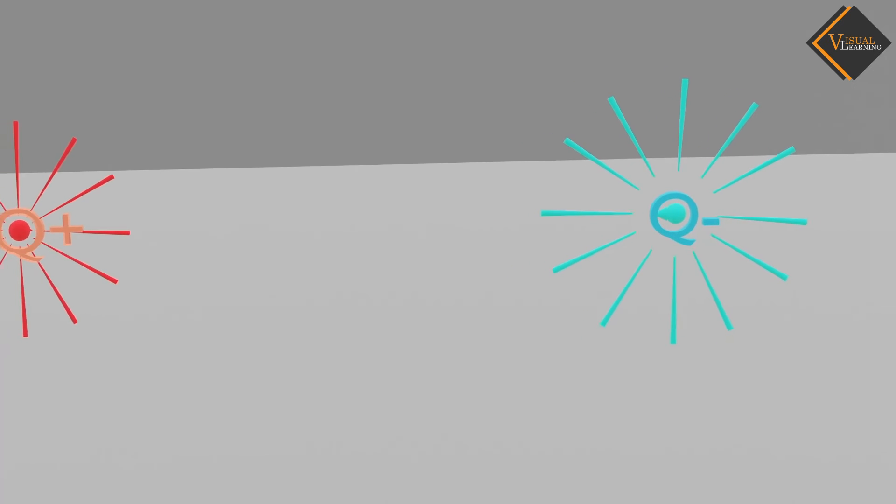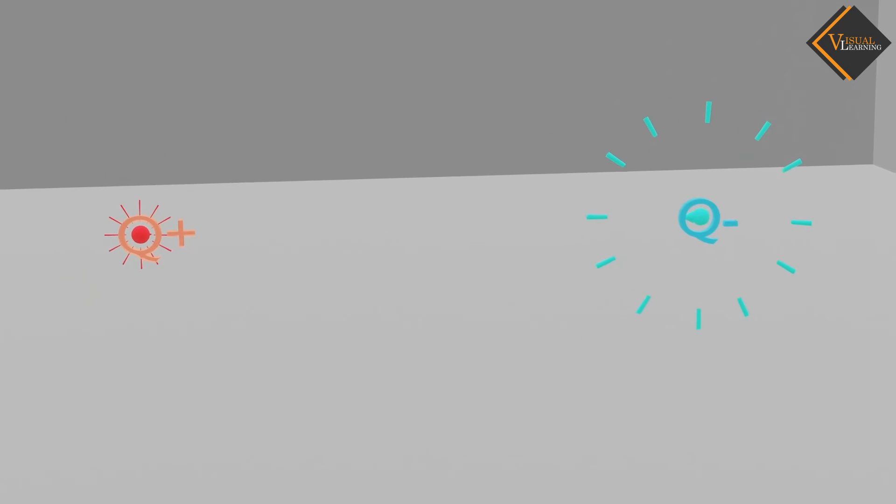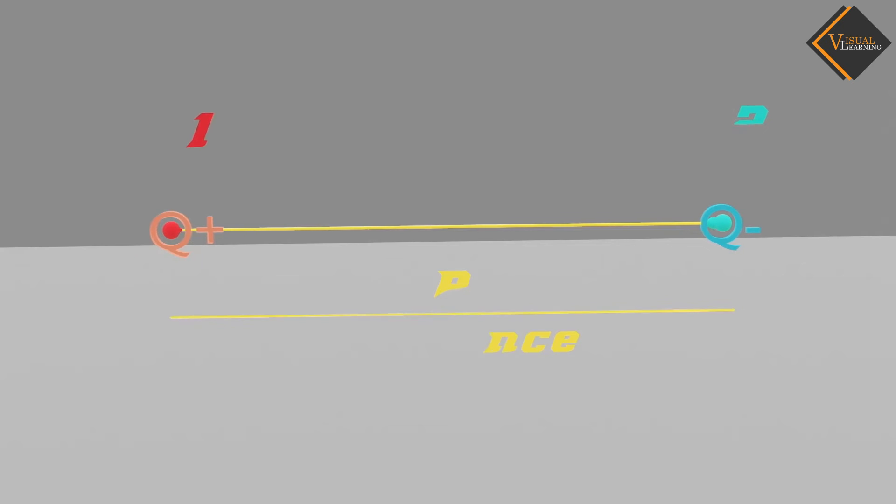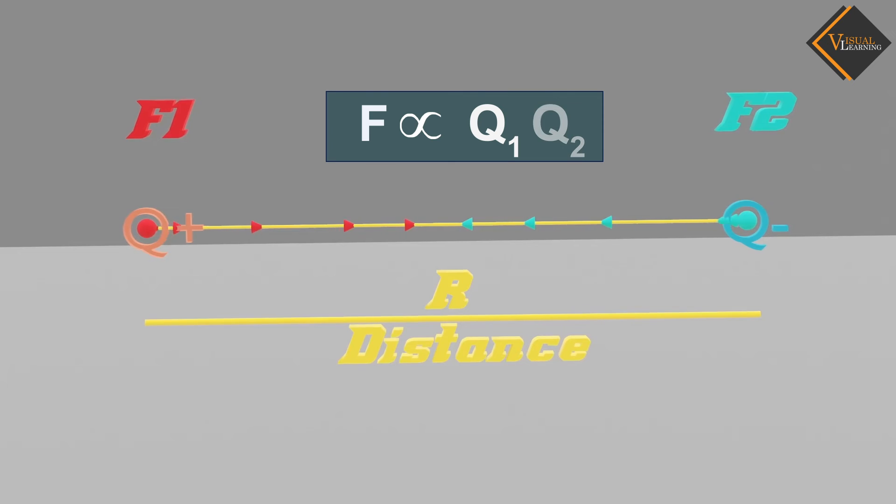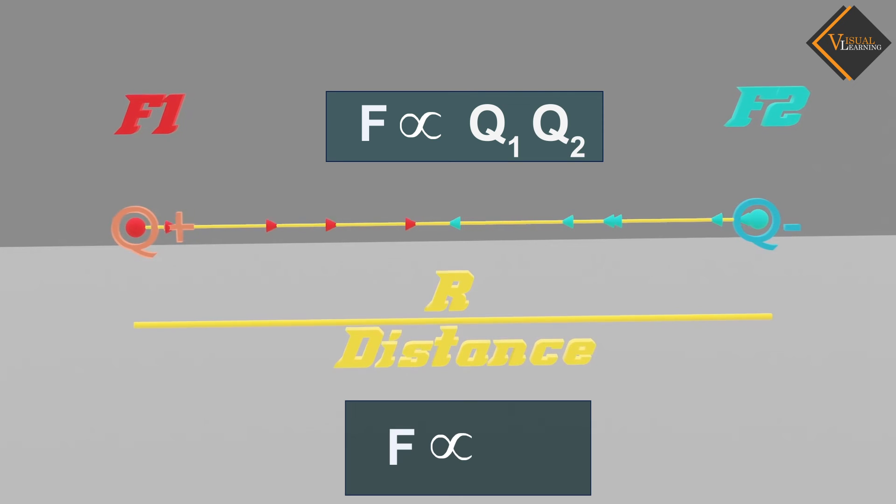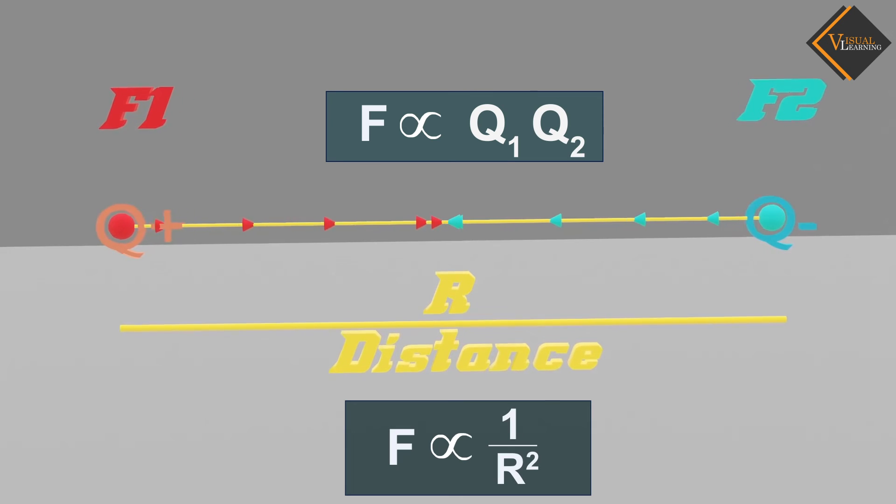When we bring two charges close together, they exert a force on each other. According to Coulomb's Law, the force between them is directly proportional to the product of their charges and inversely proportional to the square of the distance between them.